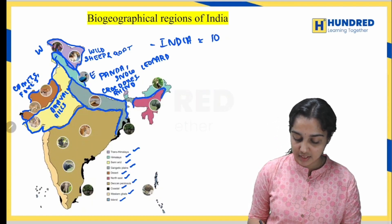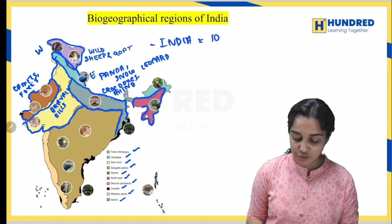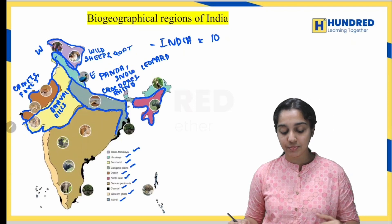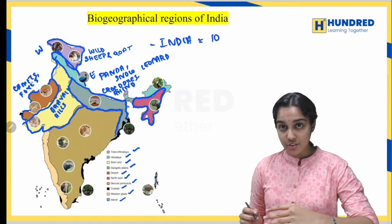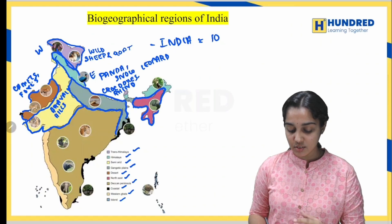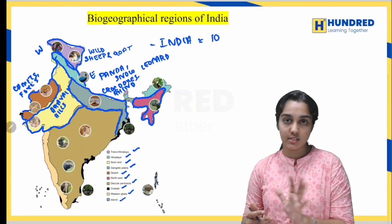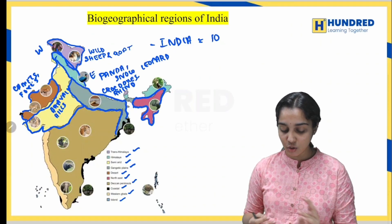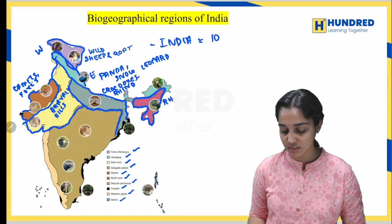The northeast region connects the mountain regions with the peninsula regions — it is the junction area. The species present in the northeast region include rhinoceros.